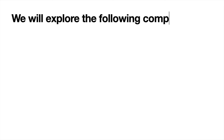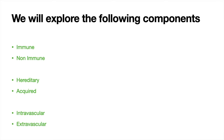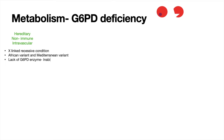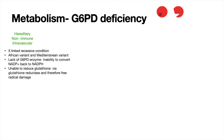Let's start by thinking about how we can classify hemolytic diseases. G6PD deficiency is a metabolism problem condition which is described as hereditary, non-immune, and intravascular, although it does have an extravascular component to it.